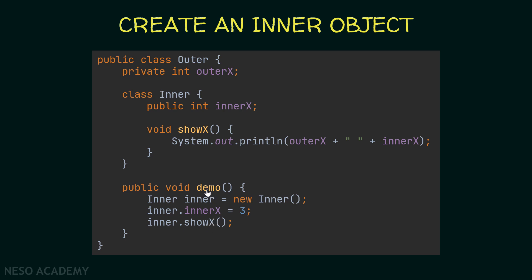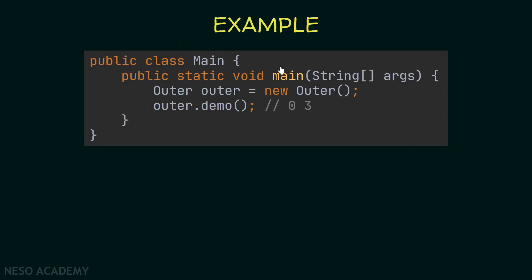Let's try using the demo method. Inside the main class and the main method, we create an outer object and call its demo method. In this case, 0 and 3 will be printed — 0 is the value of outerX and 3 is the value of innerX, because we assigned innerX to be equal to 3 inside the demo method.